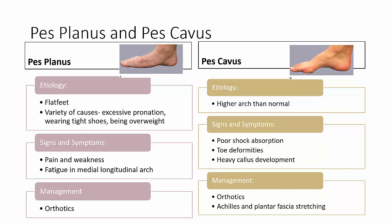Pes cavus is known as a high-arched foot. The etiology is a higher arch than normal and may be associated with excessive supination — essentially an accentuated high medial longitudinal arch. Signs and symptoms include poor shock absorption resulting in metatarsalgia, numbness and tingling among the metatarsals, foot pain, and clawed or hammer toes. It is not uncommon for a patient with pes cavus to have a tight Achilles tendon and plantar fascia.